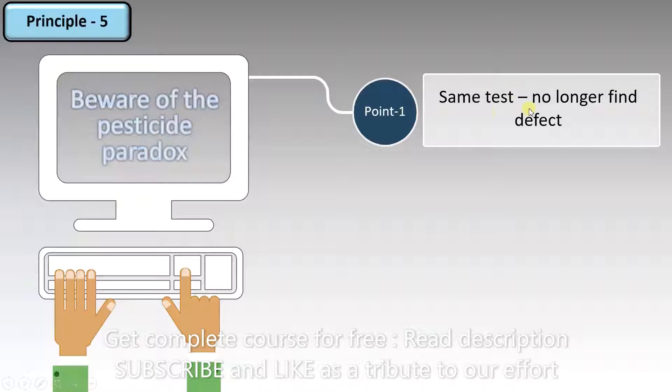Point 1, the same test no longer finds defects. During testing, if you have already found a defect in a code, then it is unlikely that you will find a defect again. Unless there is a big change in the code, you will find no more errors since you already found one and corrected it.